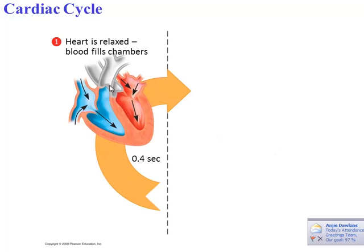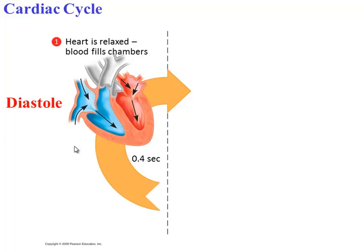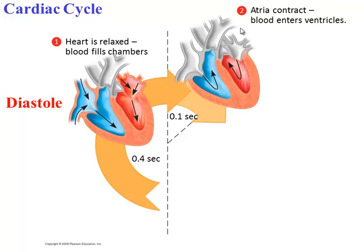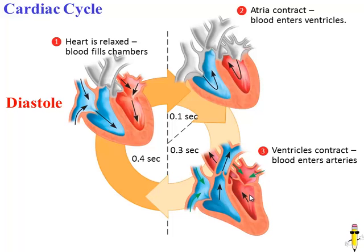During the heart's cycle of beating, or cardiac cycle, there are a few steps. During the first step, the heart is relaxed, so blood flows into both the atria and the ventricles — the valves are open to allow blood to fill up. This part of the cardiac cycle is known as the diastole, and it takes a little less than half a second. Then the atria contract, squeezing blood into the ventricles. Once that happens, the ventricles contract, squeezing blood into the arteries. The valves slam shut to prevent blood from going back into the atria. These two contracting steps are known as the systole, so systole is the heart contracting and diastole is the heart relaxing.